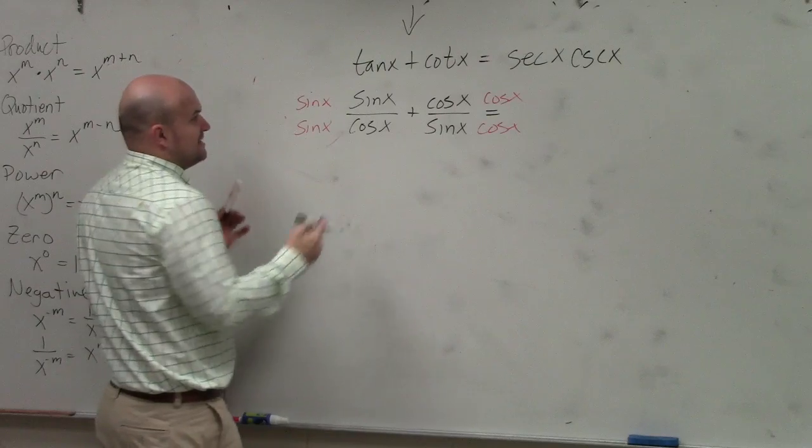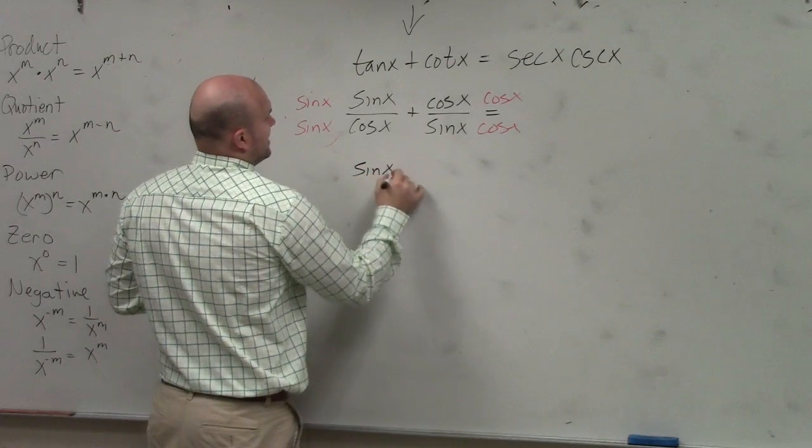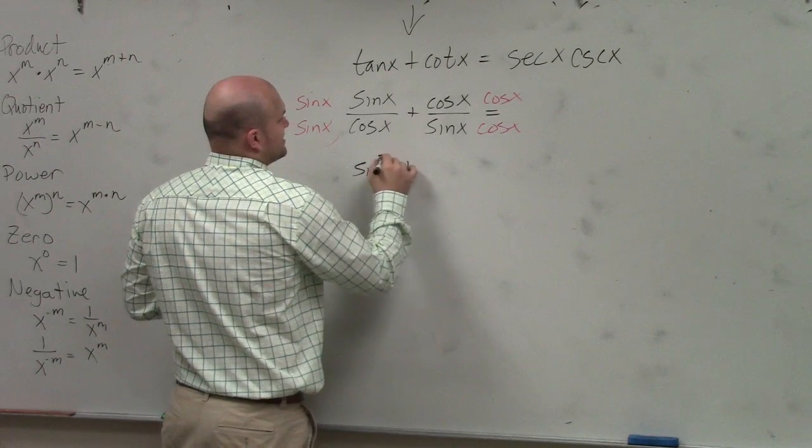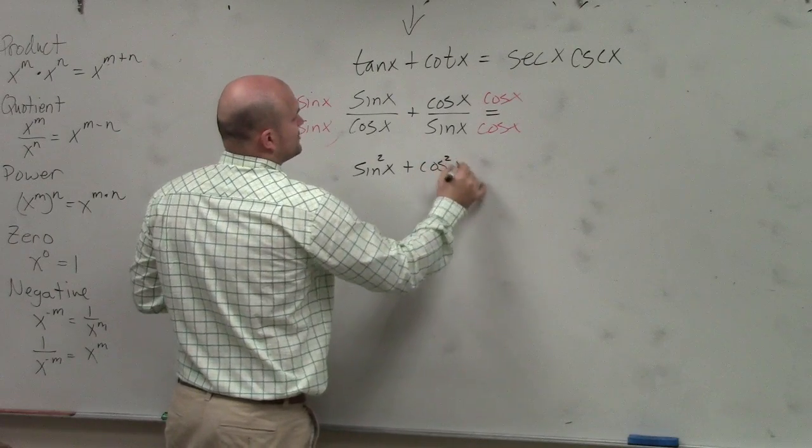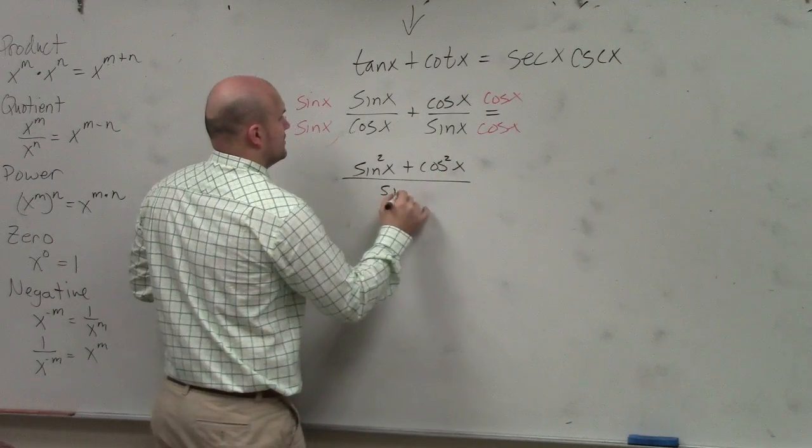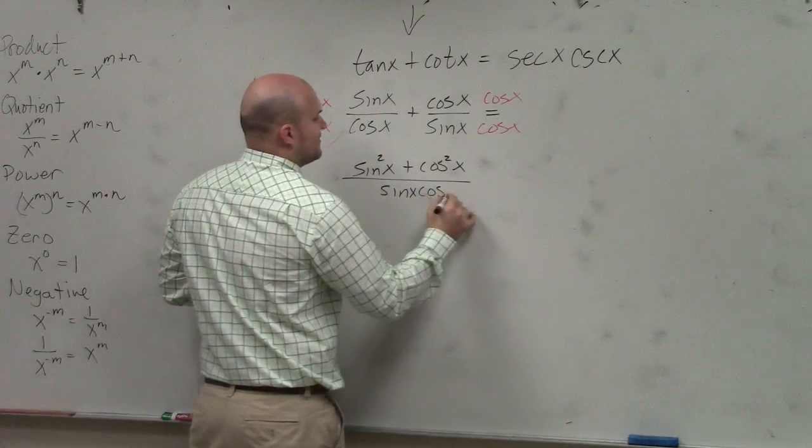So by doing that, I now obtain sine squared of x plus cosine squared of x, all over sine of x cosine of x.